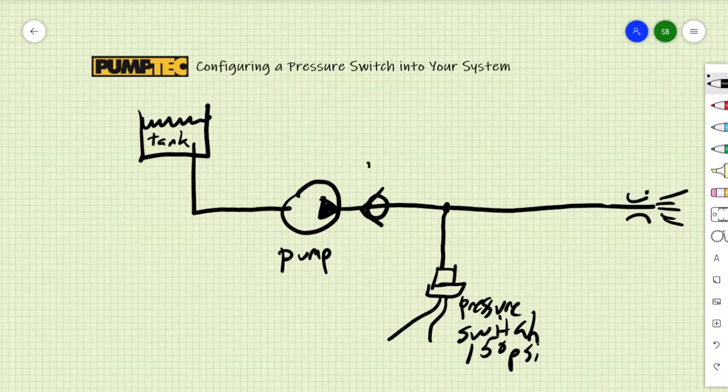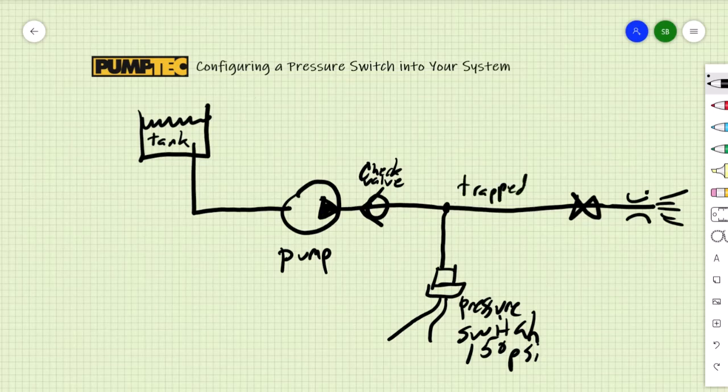The pressure switch will sense the trapped pressure between the pump and the nozzle. You need to trap the pressure with a check valve and a spray gun. This trapped pressure will only stay trapped if your check valve is a positive seal and also your spray gun doesn't leak past.